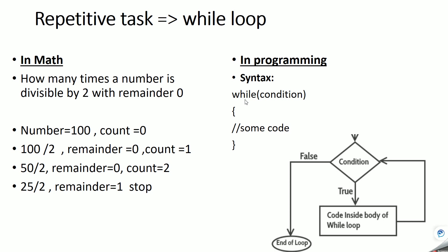The syntax of the while loop is: first we write the keyword 'while', then we write the condition, then we open and close the braces and write some code inside — the code that will perform the operation we want to repeat. When the control comes to the while loop, the condition is checked first.